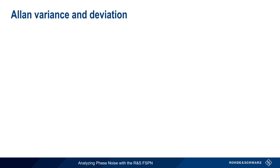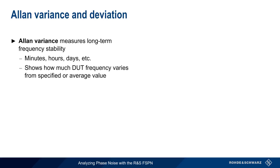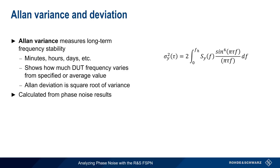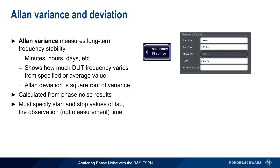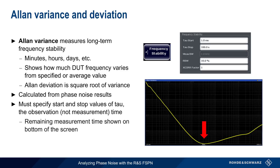The final measurement we'll look at is Allan Variance or Allan Deviation. Unlike phase noise, which is a measure of short-term frequency stability, Allan Variance measures long-term frequency stability, with long-term being on the order of minutes, hours, days, etc. Allan Variance shows how much the DUT frequency varies from the specified or average value. Note that Allan Deviation is simply the square root of Allan Variance. There are many ways to measure Allan Variance, but the FSPN calculates it directly from the phase noise results using a rather complicated formula. Fortunately, the only thing you need to specify for an Allan Variance measurement are the start and stop values of tau, the observation time. The measurement and results are performed automatically. The minimum of the curve is usually the part that we're most interested in. Because of the nature of the measurement, Allan Variance measurements can take a long time to run, so the remaining time indicator at the bottom of the screen may be helpful.